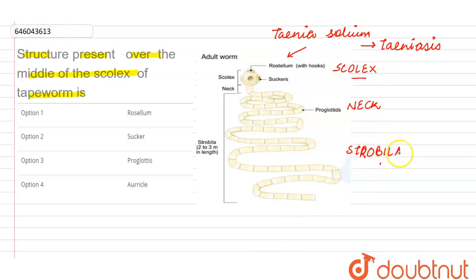So these proglottids could either be immature proglottids which lie near the neck, then there are the mature proglottids and then the gravid proglottids which are going to undergo the process of falling off.